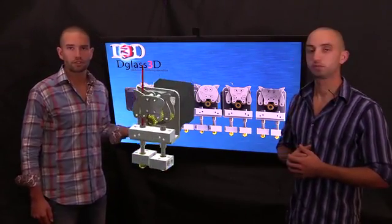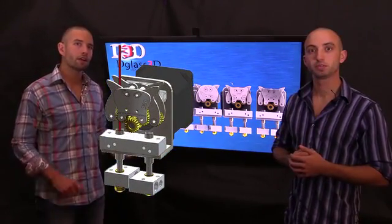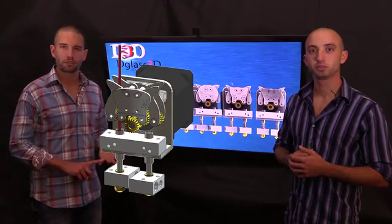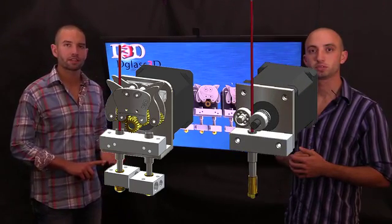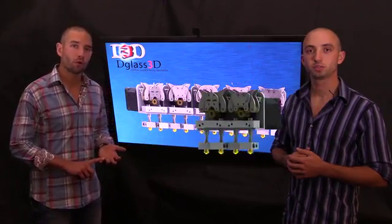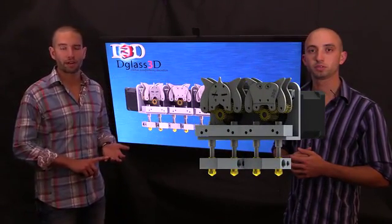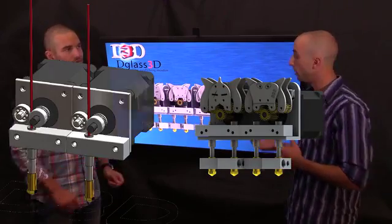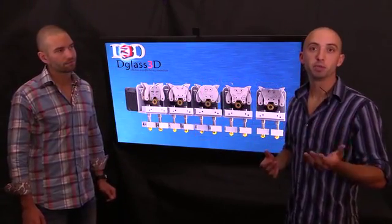So this extruder that you see here allows you to have two separate filaments or two separate extruders in the same footprint as a traditional printer. And what that allows you to do is to have four extruders in the footprint of two. And we're excited about these designs. We're going to put them out there.